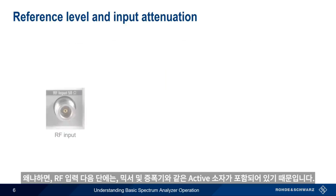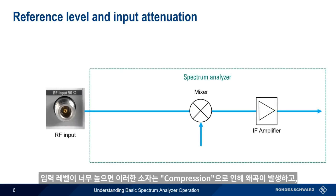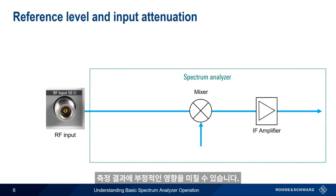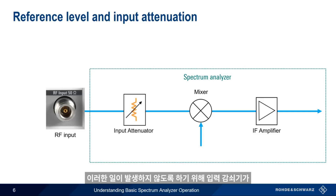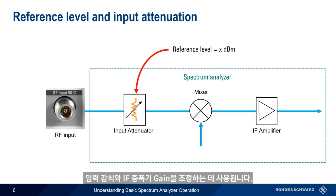What happens if we set our reference level too low? In addition to causing the trace to poke above the top of the screen, setting it too low can also affect our measurement results. Behind the RF input, some of the first sections of our spectrum analyzer include active components like mixers and amplifiers. If the input level is too high, these devices can go into something called compression, which creates distortion and negatively impacts our measurement results, sometimes very severely. To prevent this, a variable input attenuator is placed between the RF input and the sensitive components. When we set the reference level, this value is used to adjust the input attenuation and/or the IF amplifier gain in order to avoid overloading the instrument.